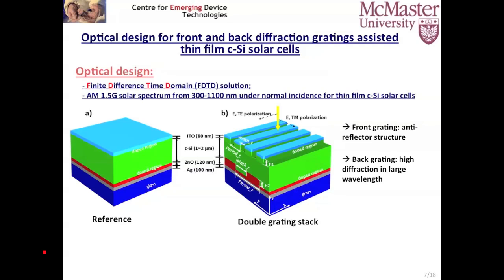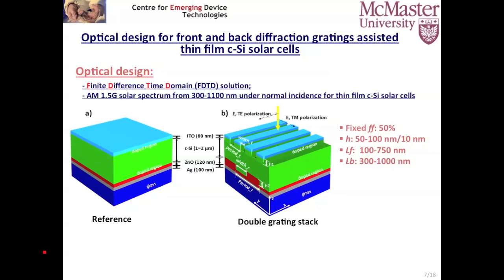The front grating is designed as an anti-reflecting structure to reduce the global reflection, and the back grating is designed to achieve high diffraction over a large wavelength range. The front and back fill factors are fixed at 50%, where the fill factor means the area of air divided by the area of material. The etching depth, front period, and back period are optimized within specified ranges.